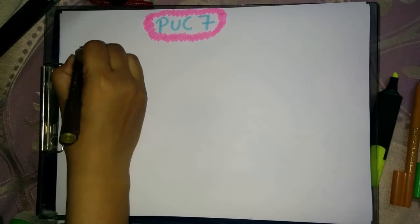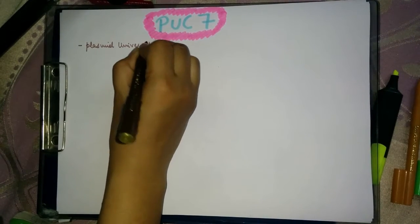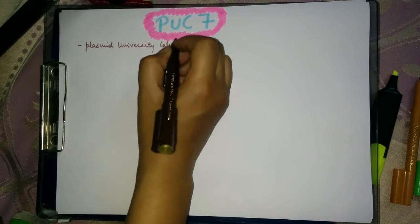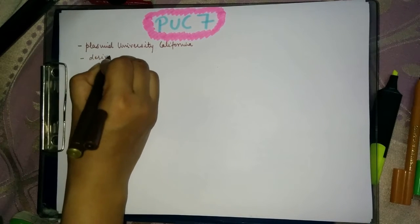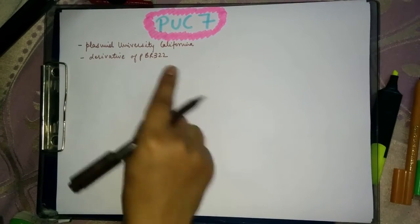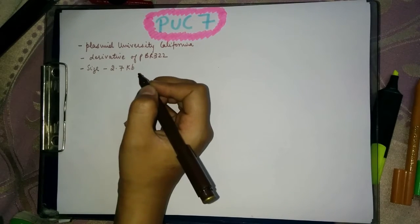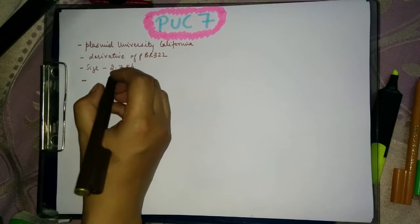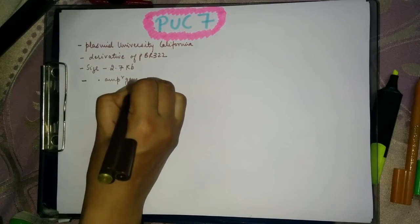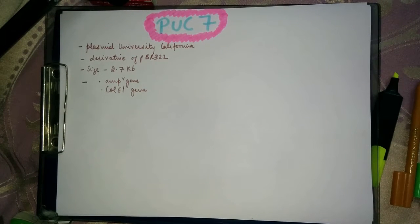In this tutorial we are going to learn about plasmid PUC-7. PUC stands for Plasmid University California. PUC-7 is a derivative of PBR 322, which means it is a modified version of PBR 322. The size of this plasmid is much smaller, about 2.7 KB. It has all the essential parts of PBR 322, including an ampicillin resistant gene and a ColE1 origin of replication. However, the tetracycline resistant gene is not present.